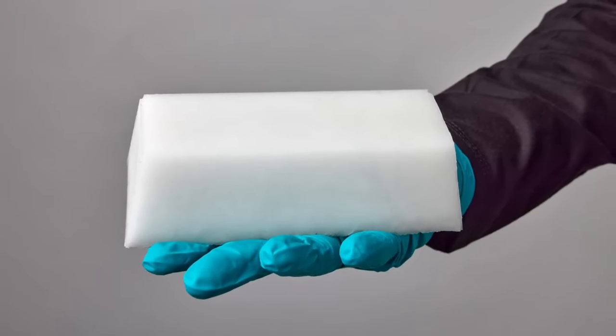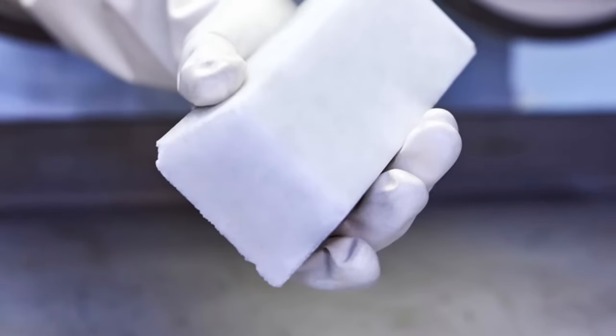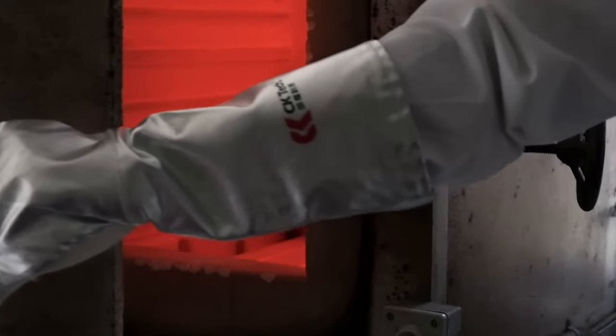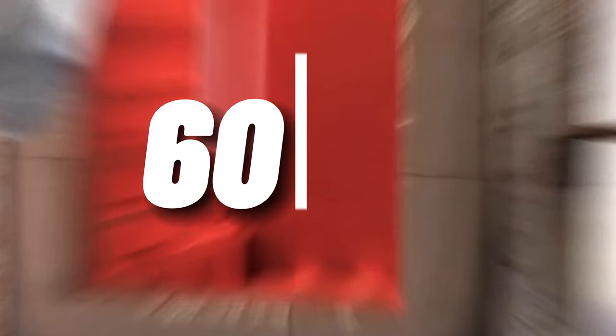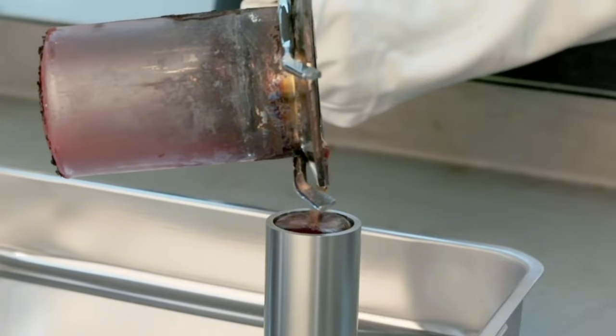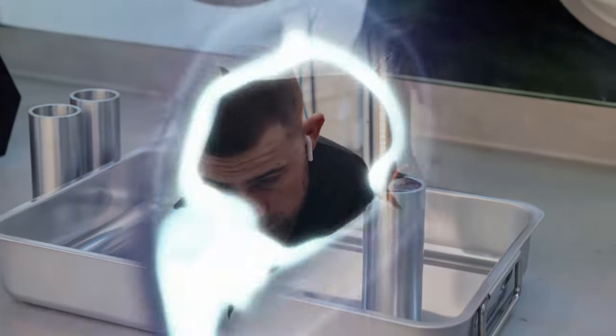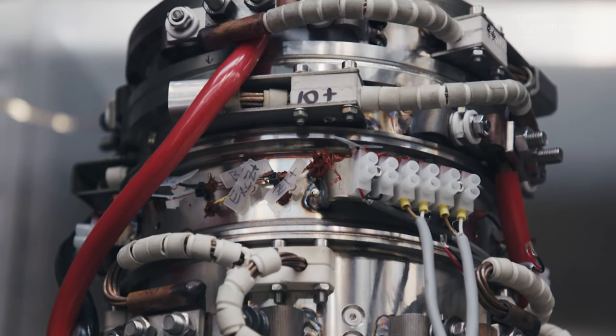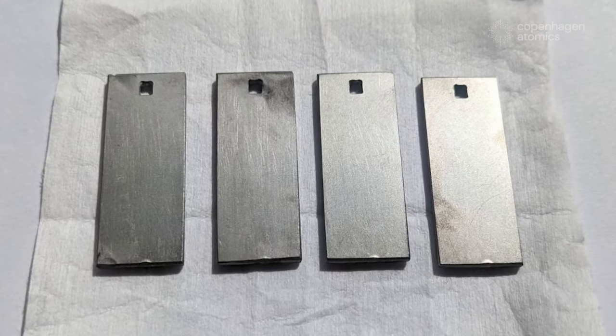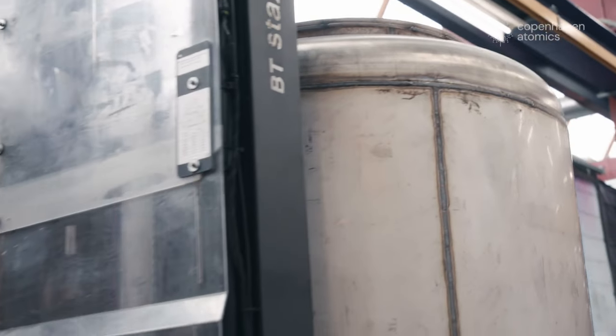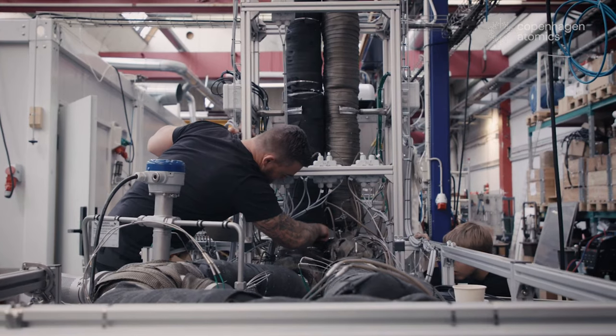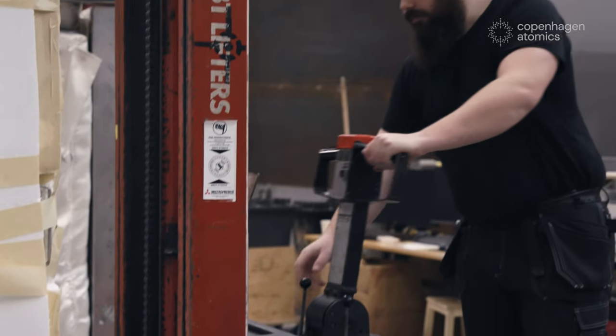A molten salt reactor is a reactor that uses a mixture of salts, such as lithium fluoride and beryllium fluoride, as both the fuel and the coolant. The salt mixture is heated to a high temperature, about 600 degrees Celsius, and becomes a liquid. The liquid salt flows through a core, where it is bombarded with neutrons and undergoes fission. The fission produces heat, which is transferred to a secondary salt loop, which drives a turbine and generates electricity. The fission also produces more neutrons, which are used to convert thorium-232 into uranium-233, or to burn up the actinides from spent nuclear fuel. The liquid salt then returns to the core, where the cycle continues.